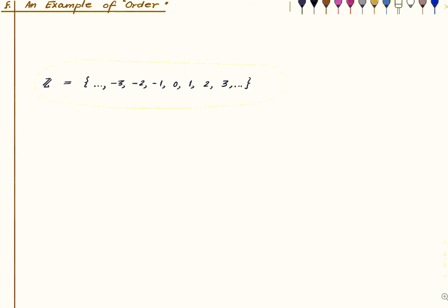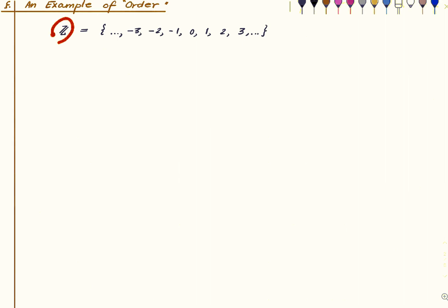Before we define a PoSet formally, let us first look at a basic example. A PoSet is trying to give the notion of order on a given set, and we already know an example of order — namely on the set of integers. We already know how to compare things here. We know what it means to say 2 ≤ 3, so we are already familiar with a notion of ordering on integers. Let us just note a few properties that this symbol enjoys.